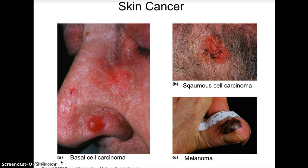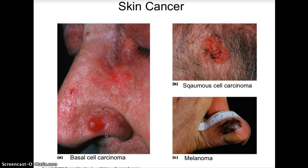Here are the types of skin cancer: basal cell carcinoma, squamous cell carcinoma, and melanoma. Basal cell is very common. To protect yourself, use broad-spectrum sunscreen, wear protective clothing and fabrics with a hat or baseball cap, and protect yourself from UV exposure.